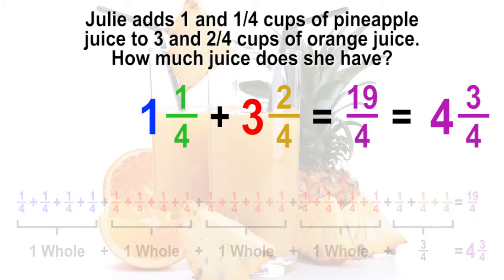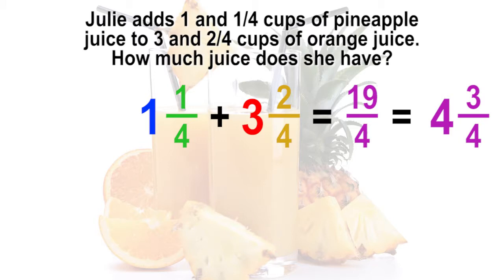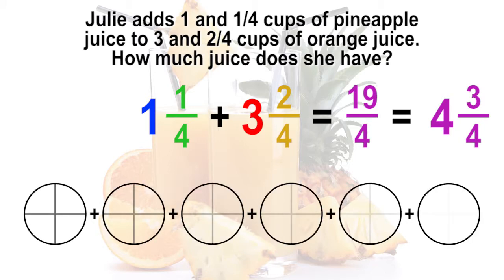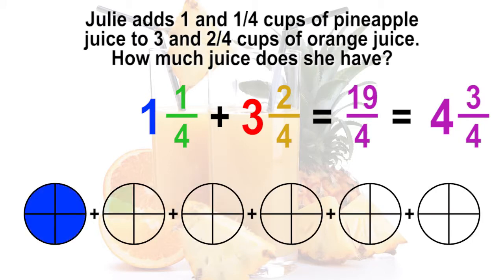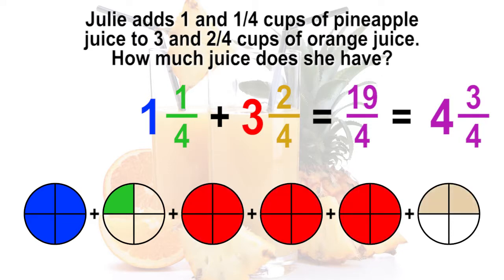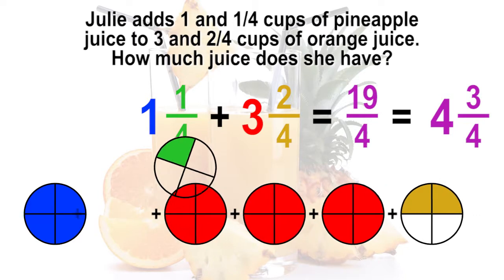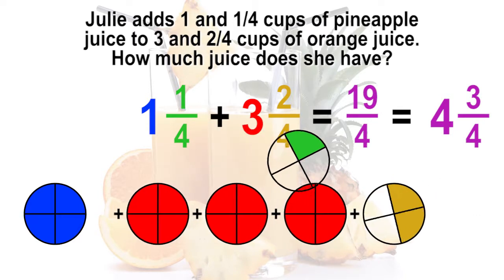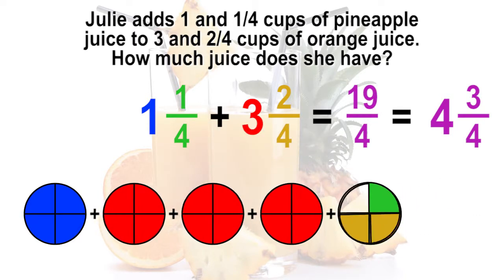It can also be justified by drawing circles and partitioning them into fourths. Shade in one whole and one-fourth, then three wholes and two-fourths. Using the commutative property of addition, rearrange the circles into four wholes and combine the one-fourth and two-fourths to get three-fourths.